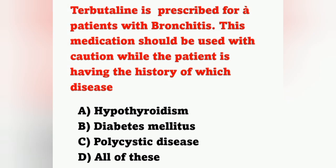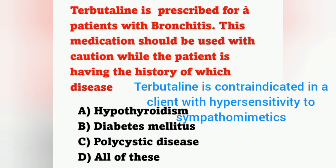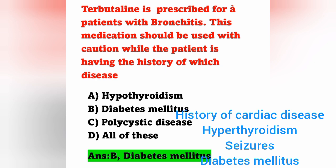Next question: terbutaline is prescribed for a patient with bronchitis. This medication should be used with caution if the patient has a history of which disease? Options: option A hypothyroidism, option B diabetes mellitus, option C polycystic disease, option D all of these. Terbutaline is a bronchodilator. It should be given with caution in patients with diabetes mellitus — option B is correct. It is also contraindicated in patients with impaired cardiac function, hyperthyroidism, or history of seizure disorder.